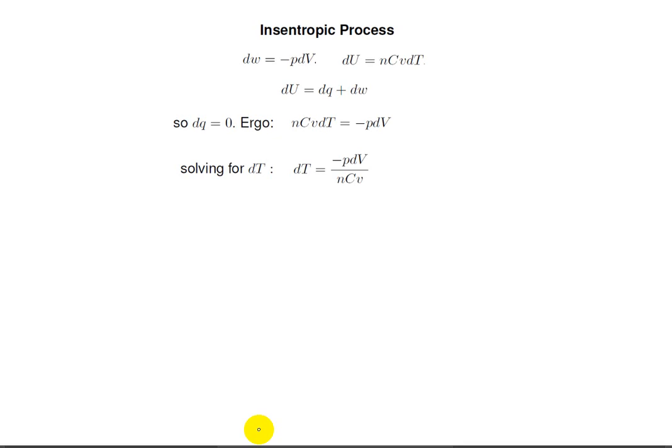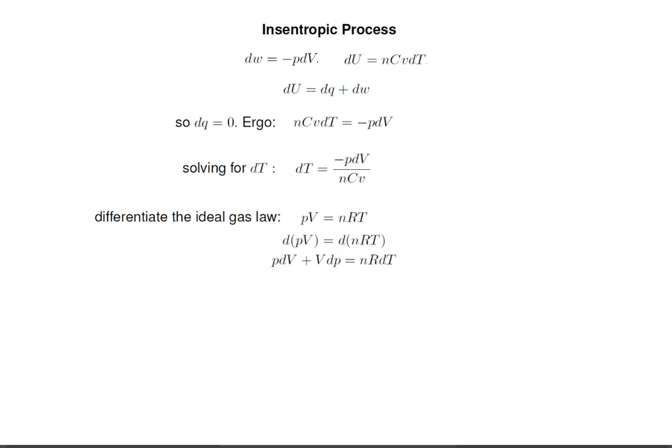And solving for dT, we're going to get dT equals minus PDV over NCV. Now let's save that aside for a second and differentiate the ideal gas law. Here I've written the ideal gas law, PV equals nRT. And in the second line, I've simply written the derivative of both sides.